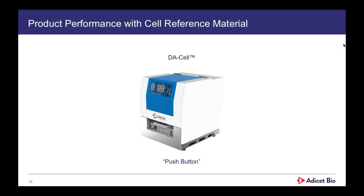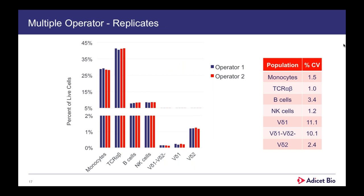That dataset was enough to convince us to bring the DA cell in and use it in our workflows. The operation is entirely push-button: the plate's loaded, you push the button, you wait, the plate's ejected, and you're ready for the next round of staining. We did a mock validation run with two independent operators doing two independent stainings with replicates each. The DA cell allowed us to get very tight control over reported populations with very tight CVs, largely because of clear separation between populations. With centralized analysis, we can get CVs down to 10–11%, and that 10–11% CV range is on populations that are less than 1% of the total live cells in the starting material.